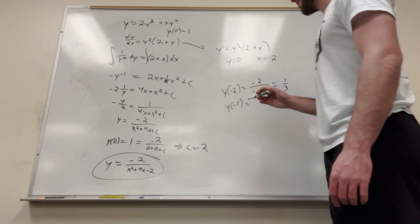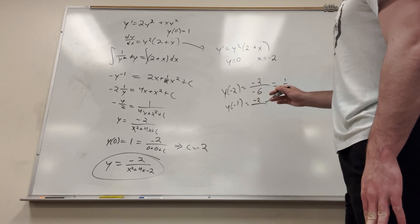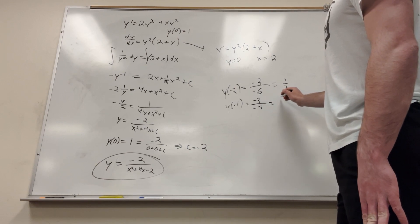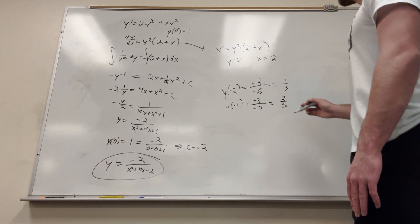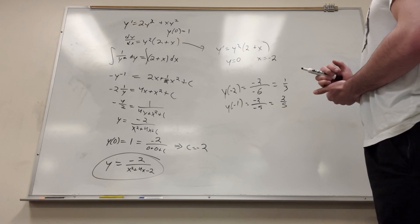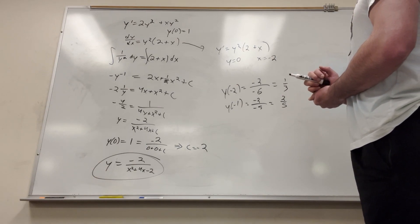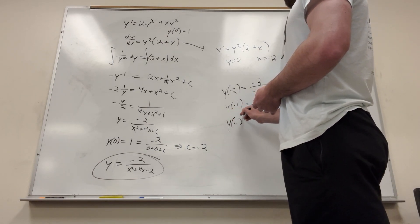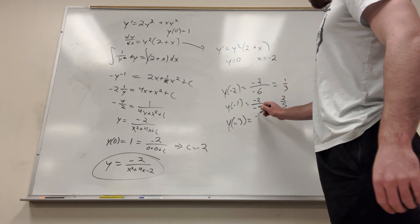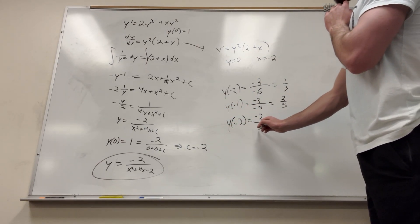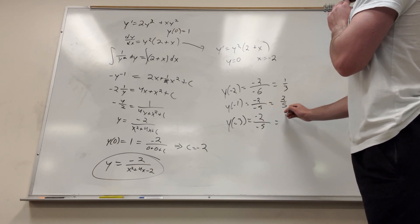So let's see, Y of negative 1. This is like a really early Calc stuff one. So it'll be negative 2 over negative 1 minus 4. So this will be 1 minus 4. So negative 3 minus 5. What is this? 2 fifths? Y of negative 3. Let's see what happens when I do that. So this will be negative 2 over, so it'll be 9 minus 12. So negative 3 minus 2. So this will be negative 5 again. So this will also be 2 fifths.